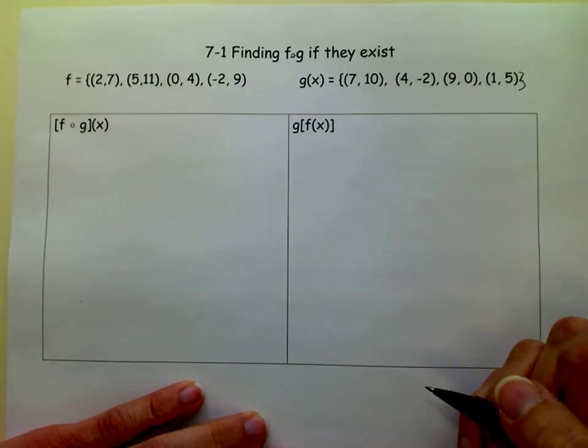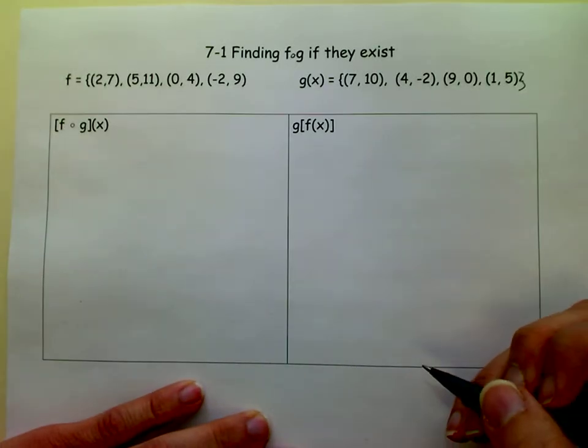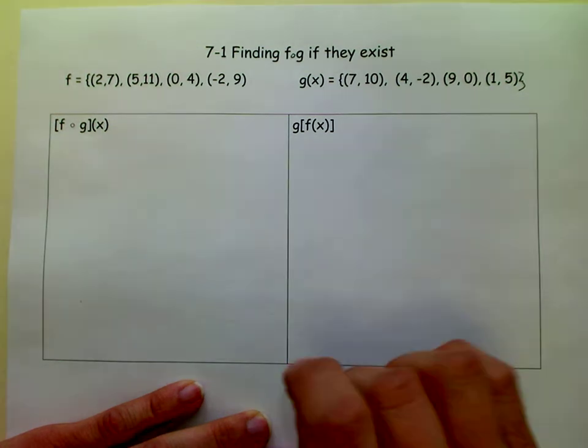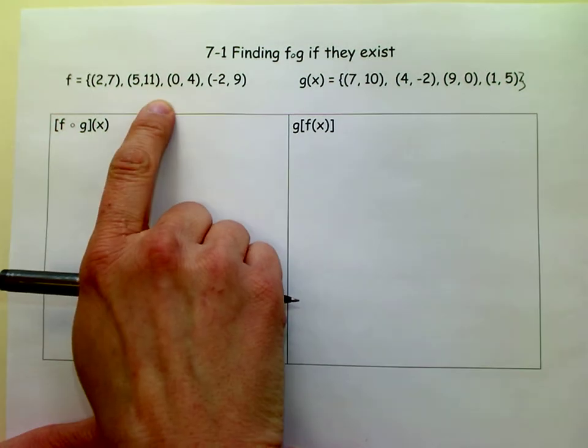Greetings, m squared here, and we are going to find f of g of x. Notice that we aren't given equations, we're given two relations. Remember a relation is a set of ordered pairs.